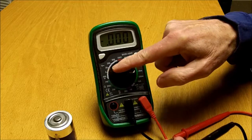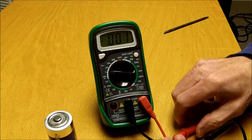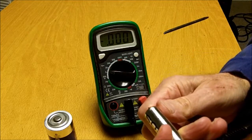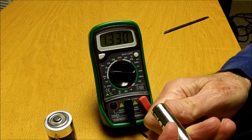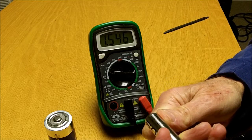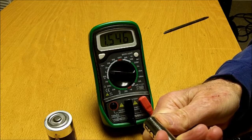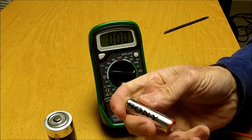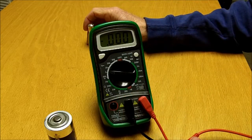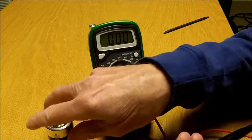Since I'm going to be checking a 1.5 volt battery, I set it on the 2 volt scale. Just set it on the scale that's a little bit higher than what you're checking. Put the red on the plus end of the battery and the minus on the minus end, and this one reads 1.546 so it's a good battery.